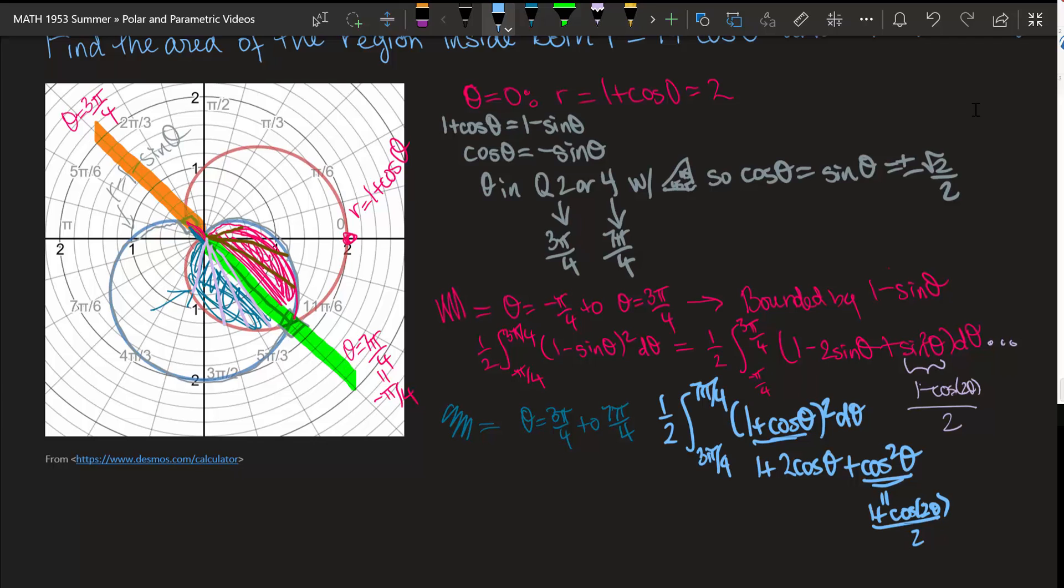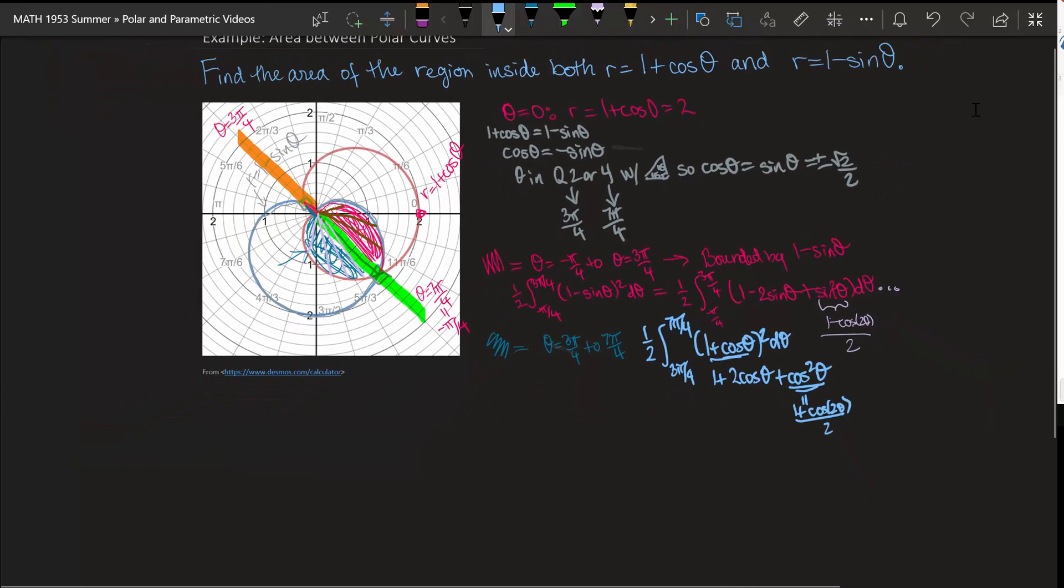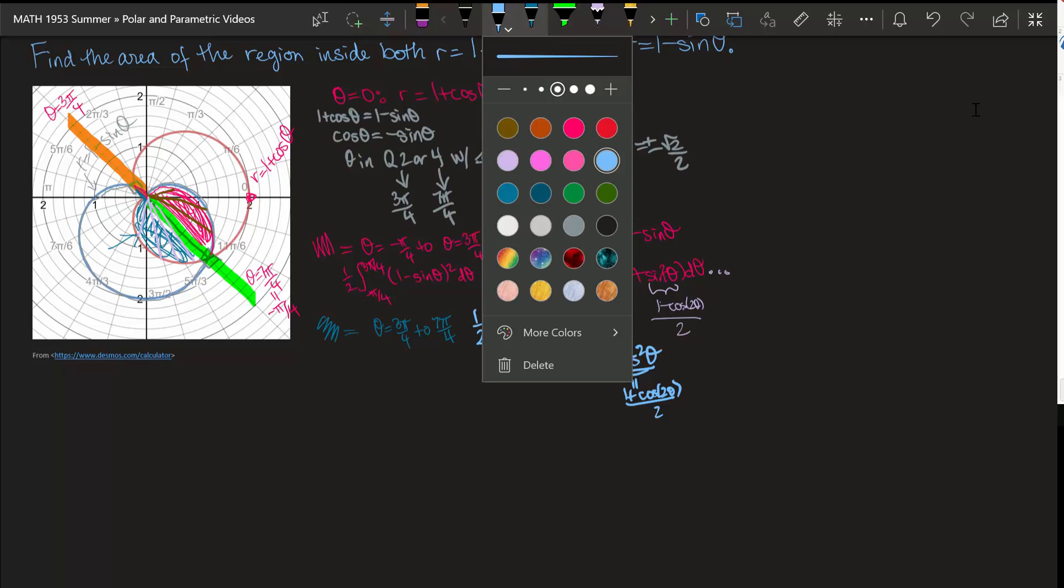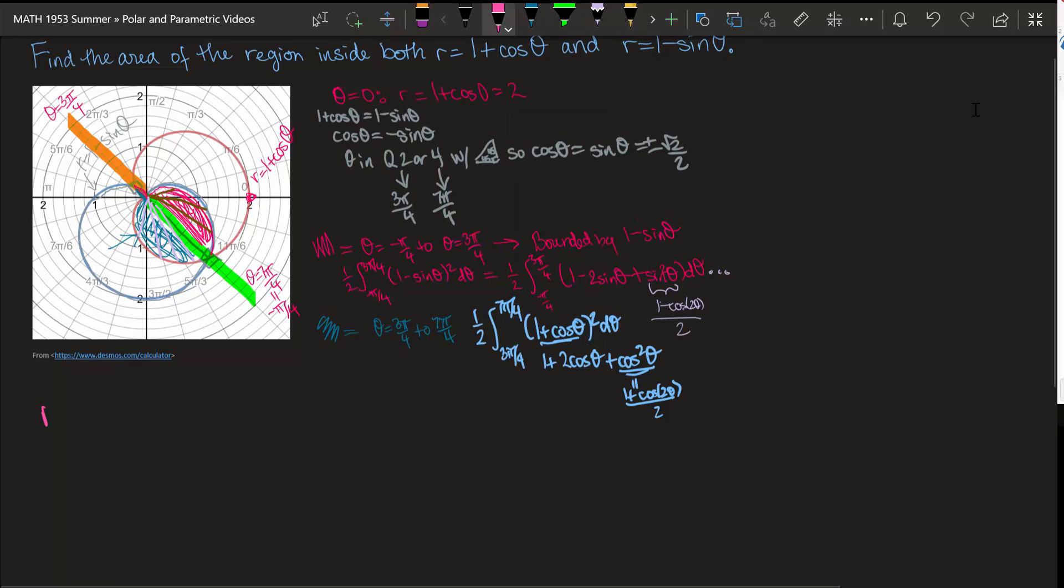So that's the area of the region that's inside both curves. What if I wanted to look at a different area, though? What if instead of wanting the area inside the two curves, we changed this up a little bit and we said, okay, now let's do the area inside of the limaçon that is outside the other curve, that is outside of the cardioid.